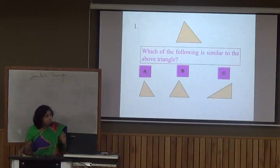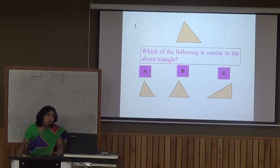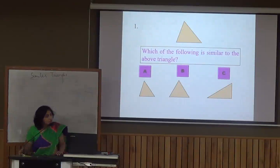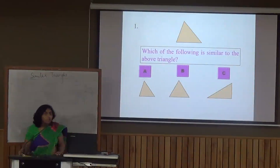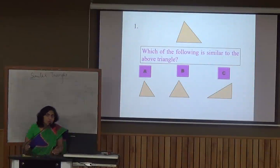Now let's see which triangle out of A, B, and C is similar to the first triangle. Can you see and make out which triangle is similar? That is a job for you. There is a difference between similarity and congruency which we are going to study in this chapter.